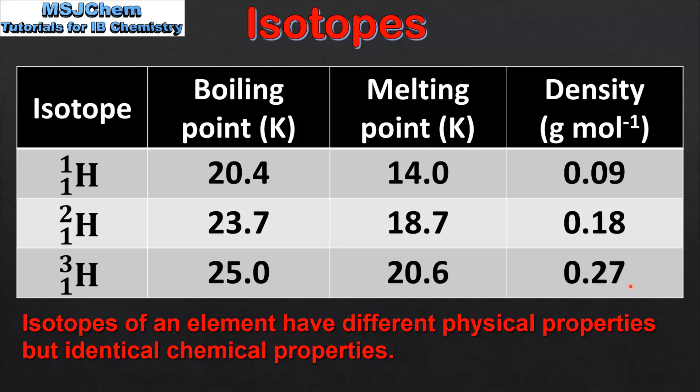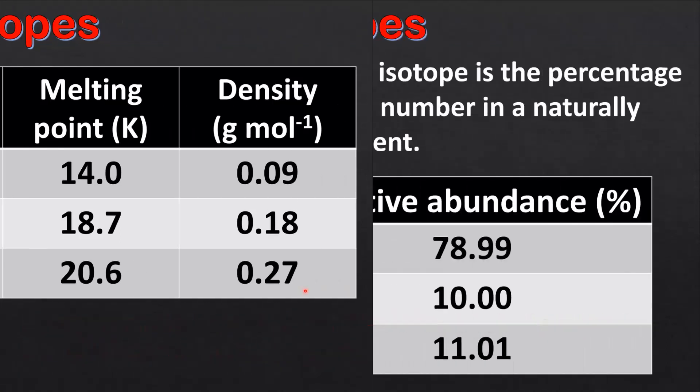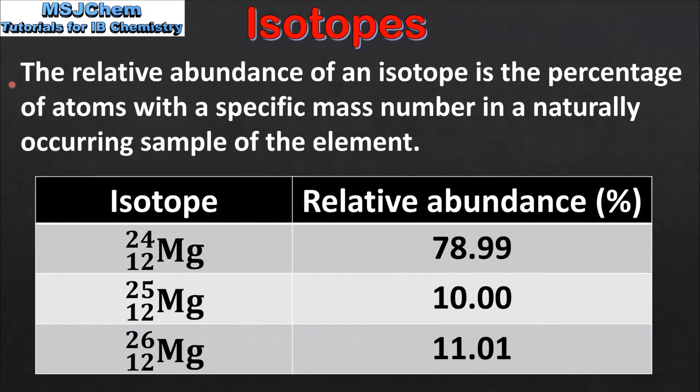Note that each isotope has identical chemical properties. Chemical properties are largely determined by the electron configuration of the atom, and because these isotopes have identical electron configurations, they have identical chemical properties.